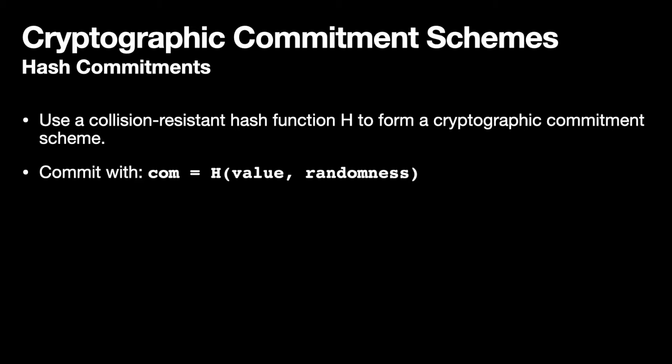One way we can make a cryptographic commitment scheme is from a collision resistant hash function. The commitment will be generated simply by hashing the value and randomness as inputs to our hash function, and that will give us our commitment. We can verify openings by checking that the commitment provided does indeed hash to the commitment given the value and randomness. If h is collision resistant, then this scheme will be binding, because if you can find a second valid opening — another value and randomness — then you found a collision in the hash function. If the output of h looks random, then you don't learn anything about the underlying value, so you have the same hiding property as we did with the envelope.